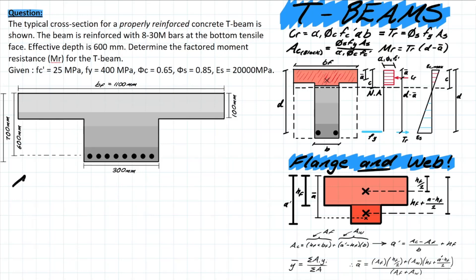We should start by determining what our area of steel is. For this case we have eight bars and they are 30Ms. 30M bars are 700 millimeters squared per bar, meaning that our total area of steel is going to be 5600 millimeters squared.